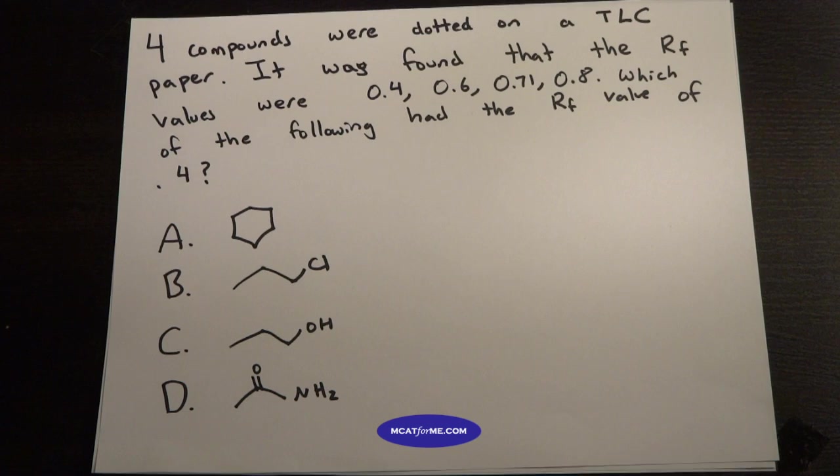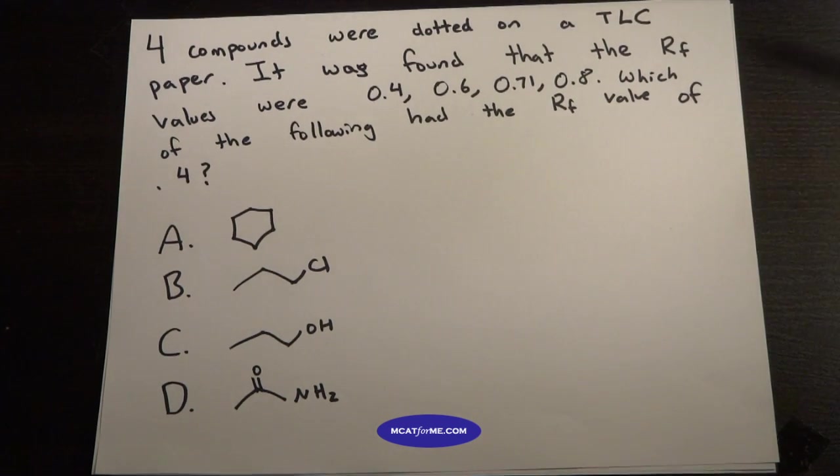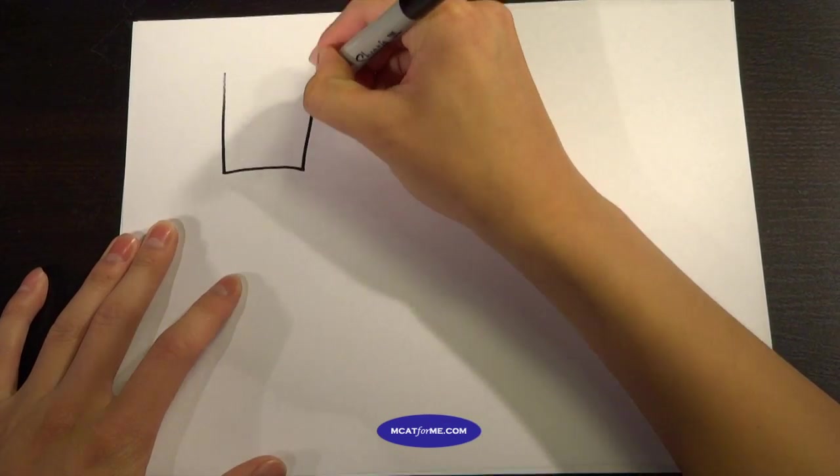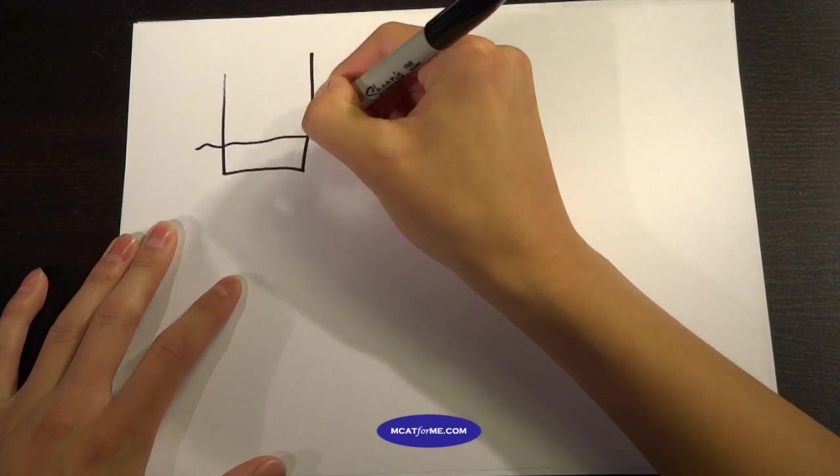So the first thing we want to figure out, the TLC is thin layer chromatography. So we have to figure out what exactly is thin layer chromatography. So this is a basic setup. We've done it probably in most of our OCAM labs.